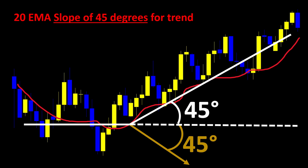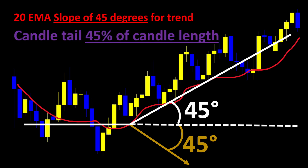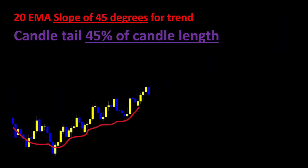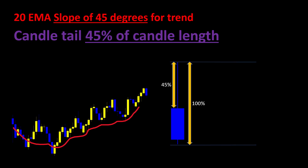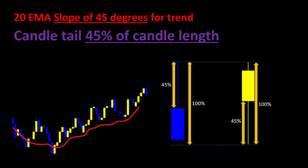For the second rule in this strategy, we're going to search for candles where the tail is at least 45 percent of the complete length of the candle. This is a typical example where the upper tail is greater than 45 percent of the whole movement of the candle. We can also consider the same shape in the opposite direction, where the lower tail is greater than 45 percent of the whole candle's range. Typically we look for the first shape in an uptrend and the second shape in a downtrend.